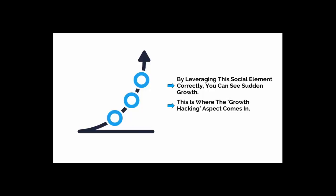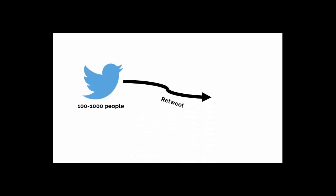If you're new to Twitter and you post a tweet to your audience, then you may get it seen by, say, a hundred people, maybe a thousand. This is pretty good. If your post gets retweeted by one of those one thousand people and they are an average user, then it may get seen by one hundred to three hundred more people on top of your original one thousand. This is also pretty good.